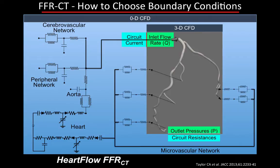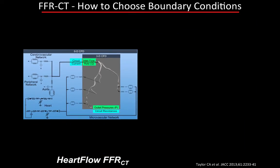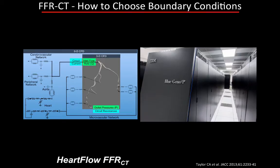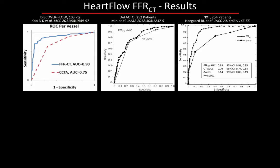HeartFlow is a company that has one way of picking those boundary condition values. They use a very complicated system of equations that considers the entire circulation in the human body as a simplistic but accurate model of an electrical circuit, coupling that with three-dimensional CFD of the coronary arteries. Unfortunately, this coupled system of equations does require considerable computational power, which has been one of the main critiques of HeartFlow's FFR-CT. On the other hand, the results of FFR-CT have been quite good to date.